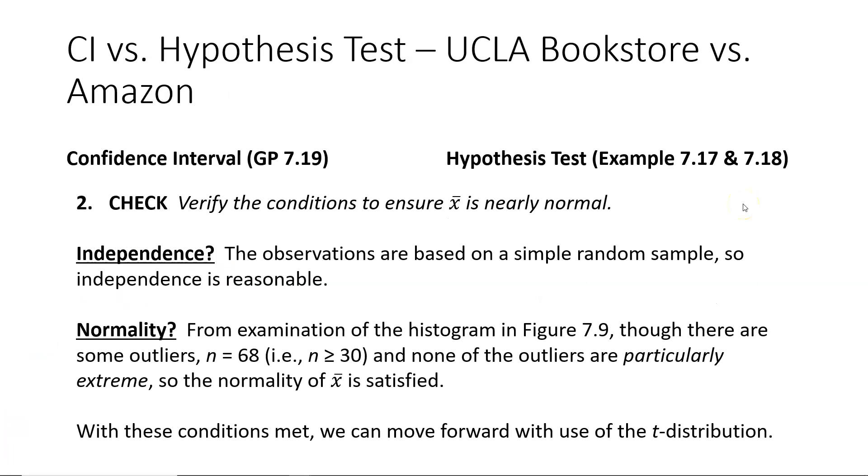Moving on to the check step for both, we see that you could have simply copied what was provided in the textbook for the hypothesis test directly into your written work for Guided Practice 7.19. That is, the check step was the same for both the independence condition check and for the normality check, and then of course the concluding statement regarding what is true if both conditions are met.